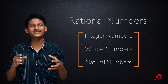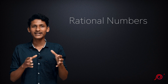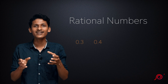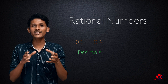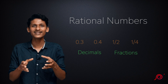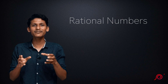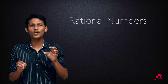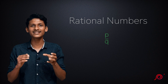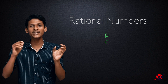There will be any number of rational numbers. For rational numbers, examples include decimals like 0.3 and 0.4, and fractions like 1 by 2 and 1 by 4. We have rational numbers. The form for rational numbers is P by Q, and we denote every rational number in the form P by Q.